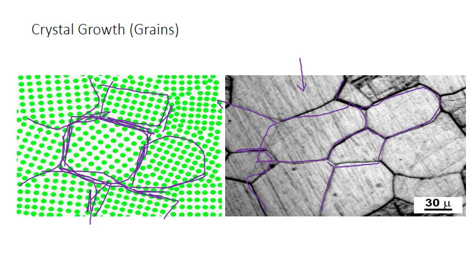In medical devices such as stents and prostheses, it is absolutely critical to maintain the mechanical integrity of the metal. Therefore, a smaller grain size is preferred, as smaller grains mean less grain boundary.